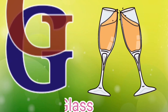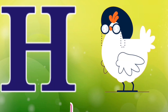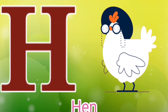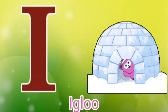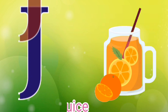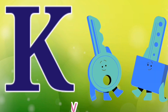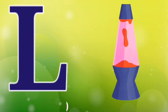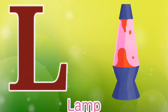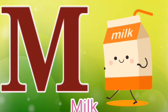G for Glass, H for Hen, I for Igloo, J for Juice, K for Key, L for Lamb.